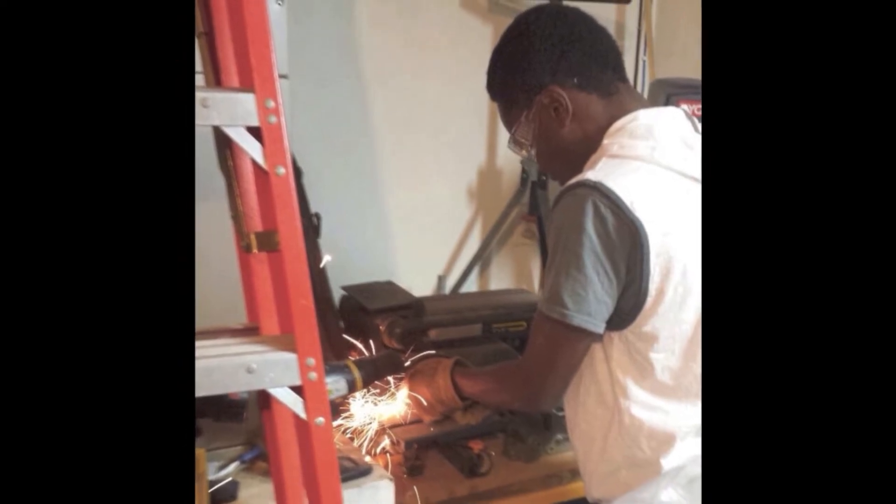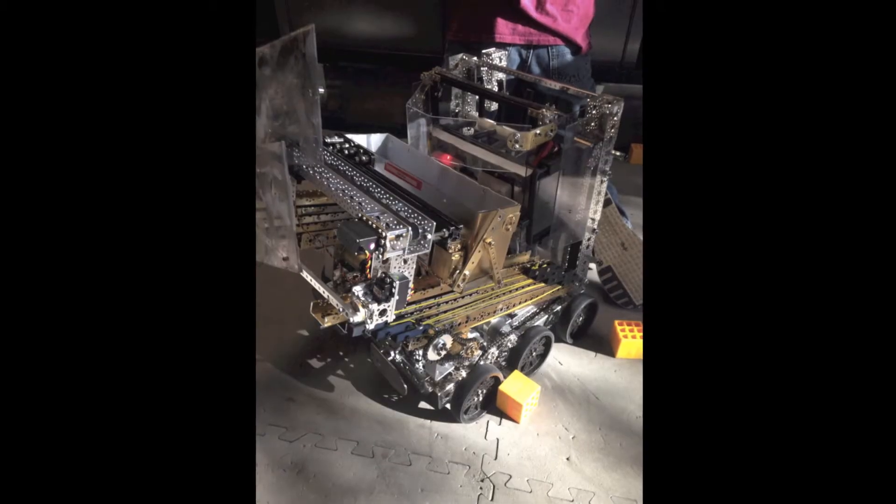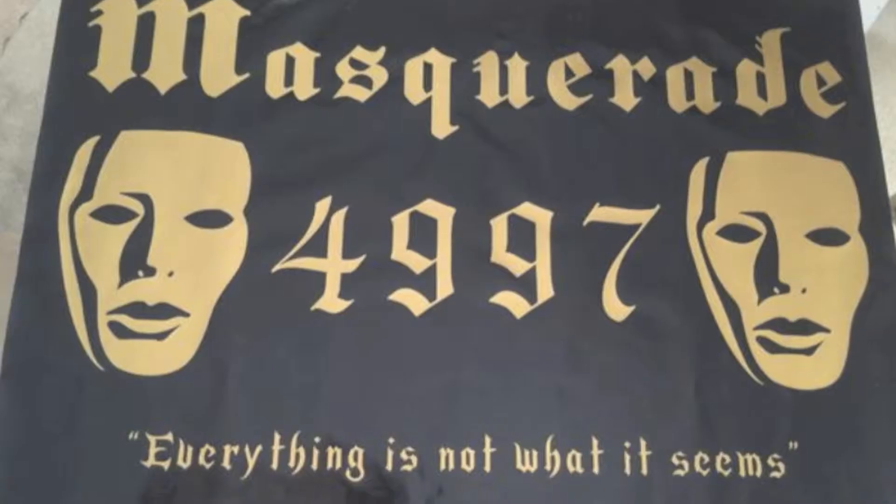Communication to other teams occurs through email, Twitter, Facebook, and YouTube. Masquerade revolves around the central theme of the Masquerade. Our robot is painted in our team colors black and gold, as is our box and banner.